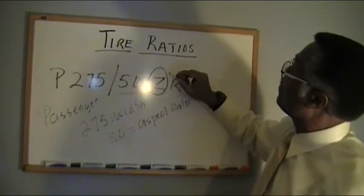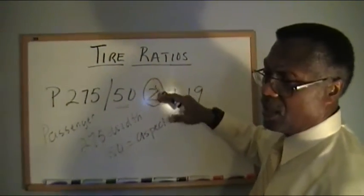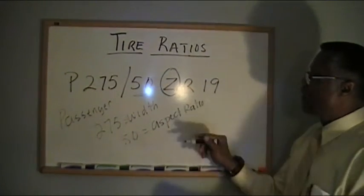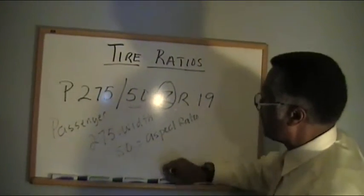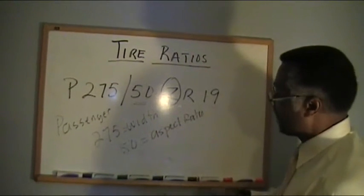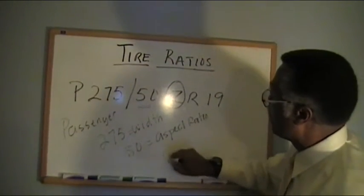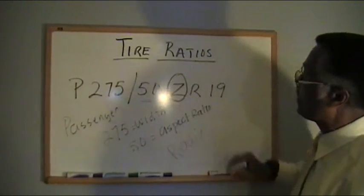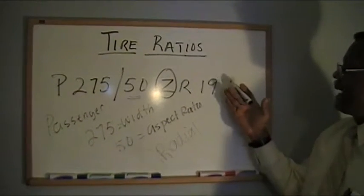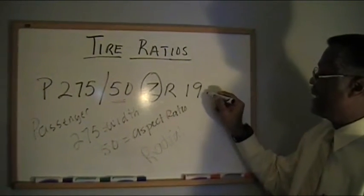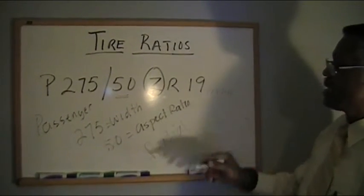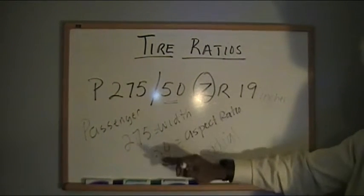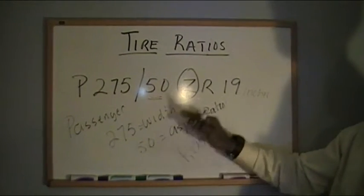For now we're going to overlook the Z - I will discuss the Z a little later. But for now we look at the R. The R stands for radial. The R tells me this is a radial tire with a diameter of 19 inches. So basically this is a passenger tire with 275 width, 50 aspect ratio, radial tire, 19 inches.